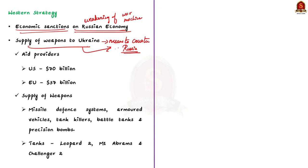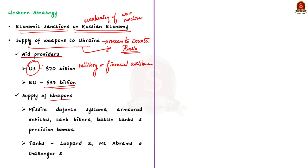Among the aid providers, the US plays a major role as the biggest aid provider for Ukraine. The US has pledged military and financial assistance worth over 70 billion dollars, and the European Union has pledged 37 billion dollars. They also promised delivery of weapon systems including missile defense systems, armored vehicles, tank killers, battle tanks and precision bombs — tanks like Leopard 2 from Germany, M1 Abrams from America and Challenger 2 from Britain.